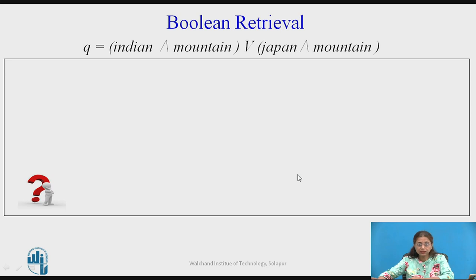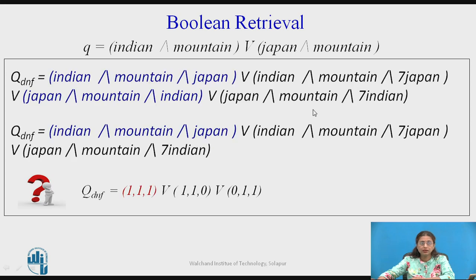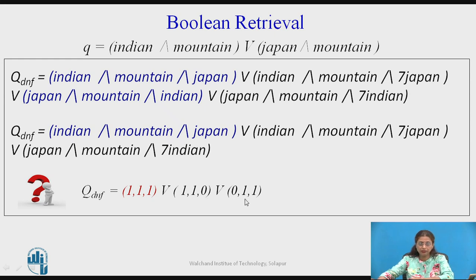Now pause the video and try to find the DNF for the given query — that is, 'Indian AND mountain OR Japan AND mountain' — which we want to search in our collection. It is in disjunction of conjunction but all terms are not present, so introduce the missing terms and find the DNF. The answer has three components: (Indian AND mountain AND Japan), (Indian AND mountain AND NOT Japan), and (NOT Indian AND Japan AND mountain). Converting to weight vectors: the first component gives 1 1 1, the second gives 1 1 0, and the third gives 0 1 1 — following the sequence Indian, mountain, Japan.